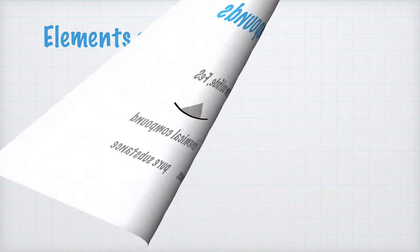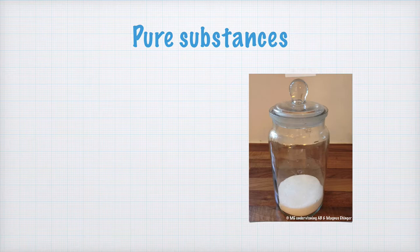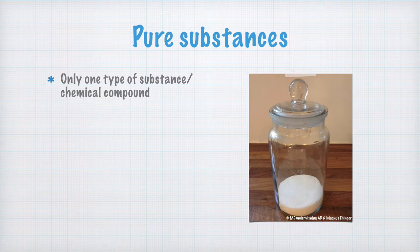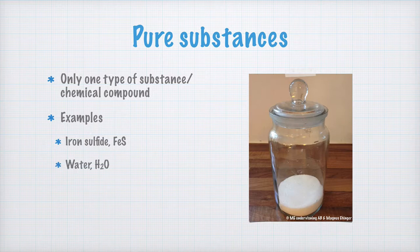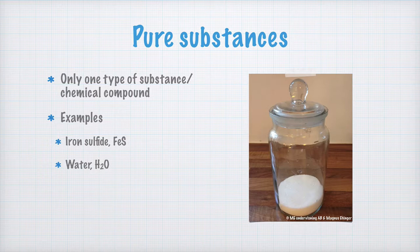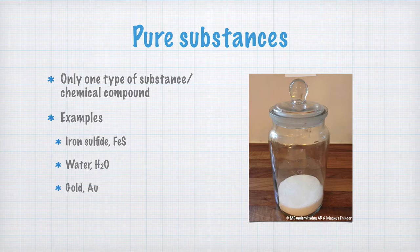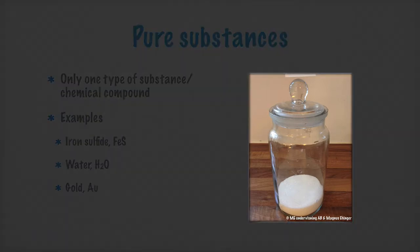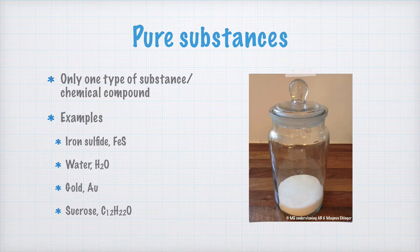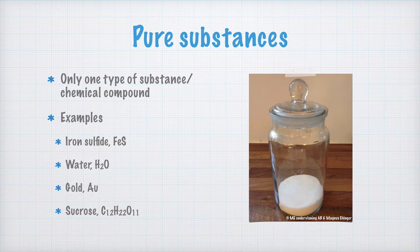We have to dig a little deeper into what a pure substance is. In a pure substance, there is only one type of chemical compound. Take this to your notes too. A pure substance may, for example, be iron sulfide, FeS. But we can also talk about pure water, H2O. If a glass of water only contains water and nothing else, it is a pure substance. Pure gold, Au, only consists of gold atoms. It is also a pure substance. Pure sugar, which you can see in the picture here, consists only of sugar molecules, C12H22O11. All these are examples of different pure substances, some in chemical compounds and others, like the gold, as elements.